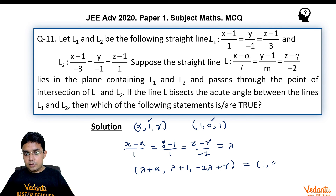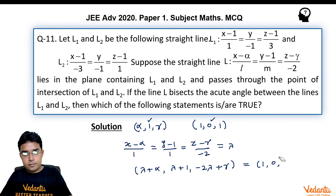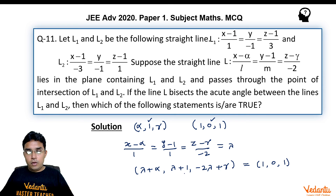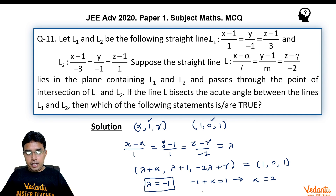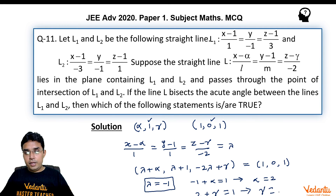Since (1, 0, 1) also lies on line L, we equate (λ+α, λ+1, −2λ+γ) = (1, 0, 1). Comparing y-coordinates gives λ = −1. Substituting into the x-coordinate gives α = 2. Substituting λ = −1 into the z-coordinate: 2 + γ = 1, so γ = −1.